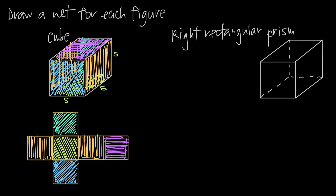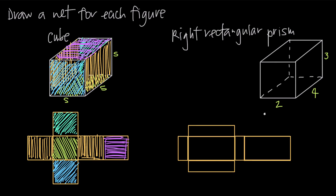What about a right rectangular prism? It's the same type of figure except the length, width, and height are not all equal. For example, we might have a side length of two, a side length of four, and a side length of three. Looking at the bottom, it's a rectangle that's two by four, so we start the net with a two-by-four rectangle. This is the bottom of the right rectangular prism.